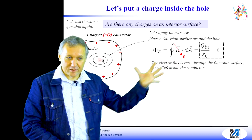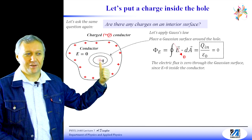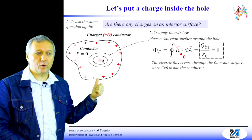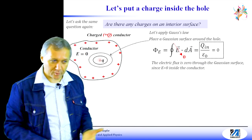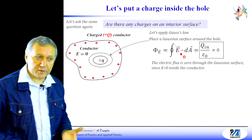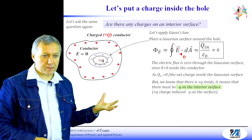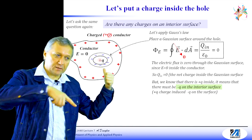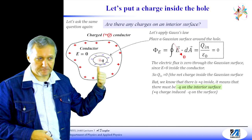On the interior surface, there must be net negative charge accumulated, and its absolute value equals the value of the charge inside of the hole, but opposite in sign. Conceptually, the electrons inside the conductor see the positive charge in the hole. Opposite charges attract, so negative electrons are attracted toward the positive charge. They run toward that interior surface but cannot reach the positive charge because there is a wall — so they stay at that interior surface.